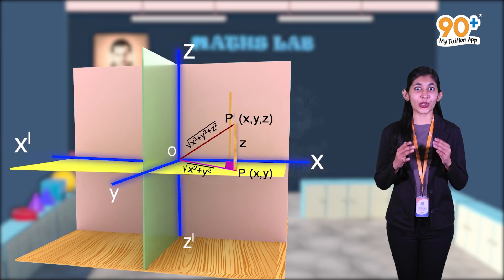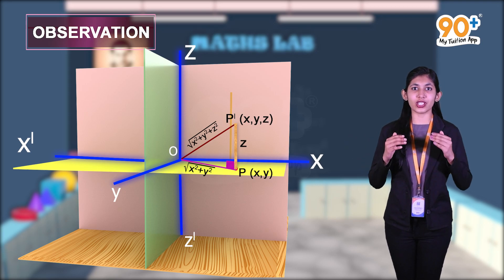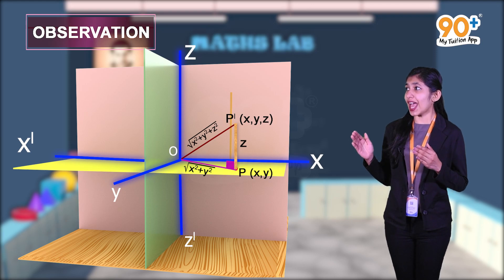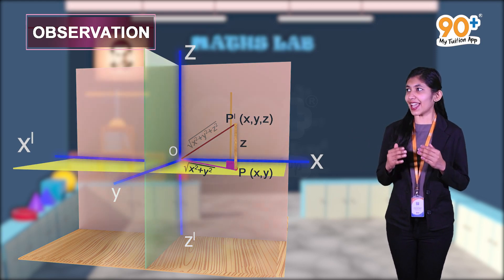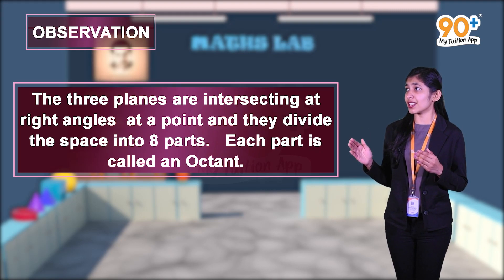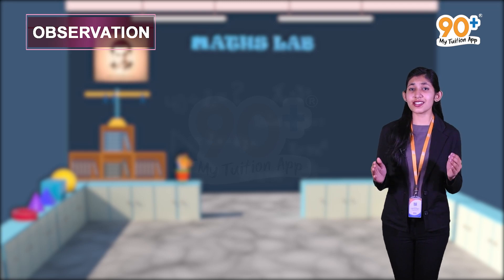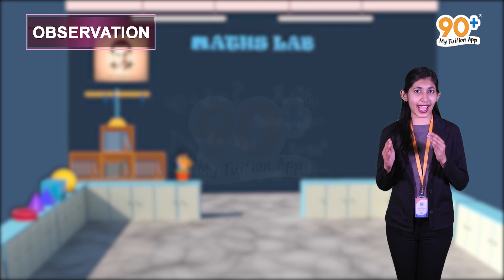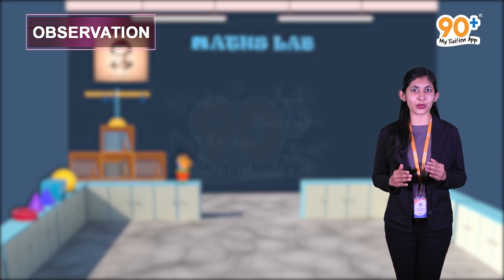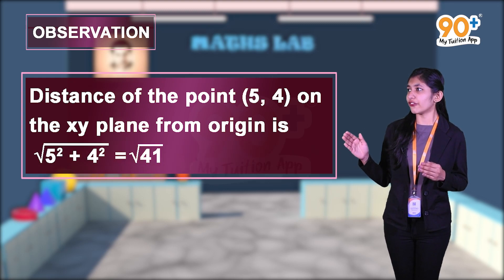Now let's move on to observation. We fixed the three square sheets so that they are mutually perpendicular, with each square sheet representing a plane. The three planes intersect at right angles at a point and divide the space into eight parts. Each part is called an octant. We got the distance from origin O to point P(x, y) as the square root of x squared plus y squared. Therefore, the distance of the point (5, 4) on the xy-plane from the origin is the square root of 5 squared plus 4 squared, which equals root 41.